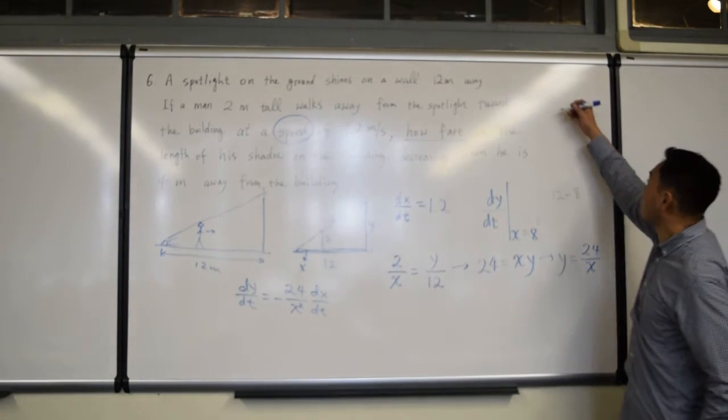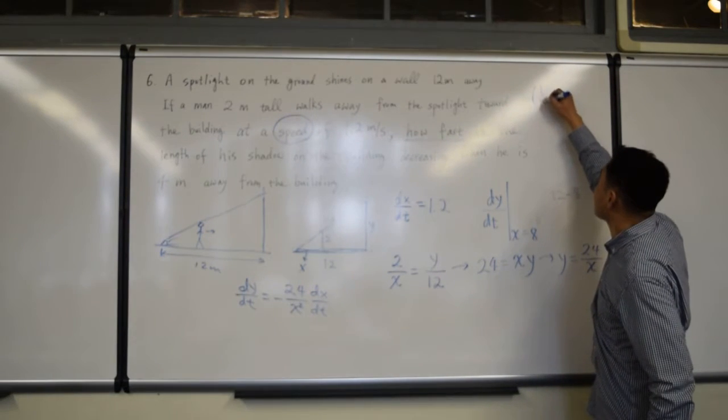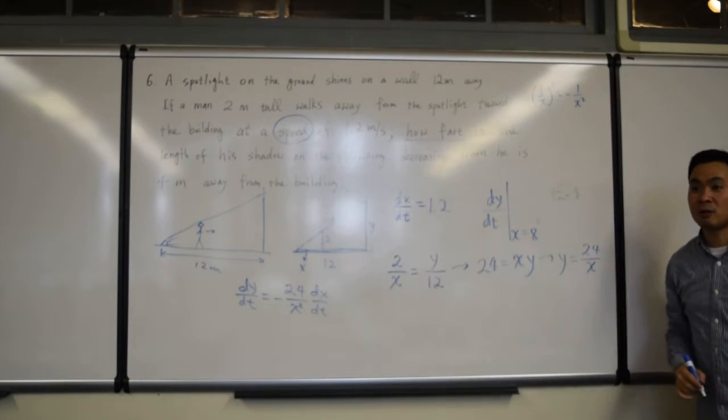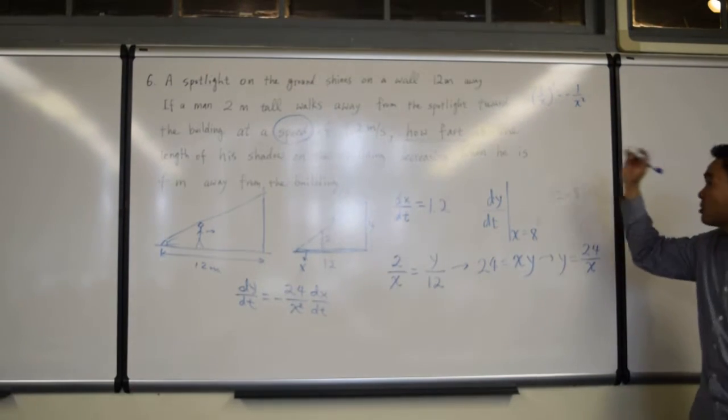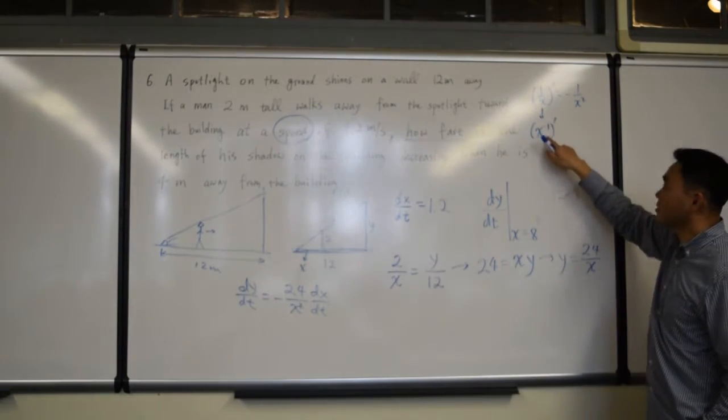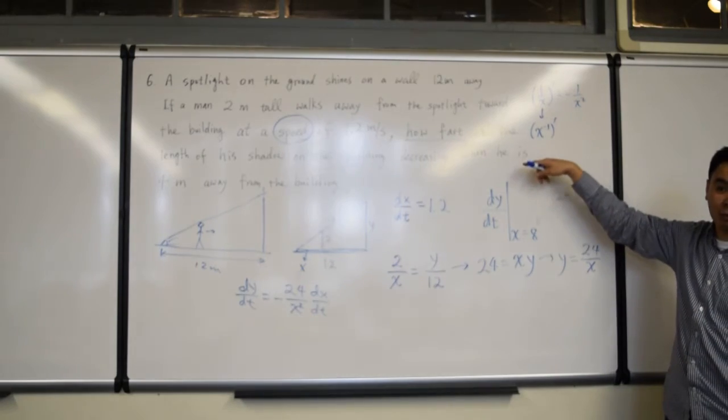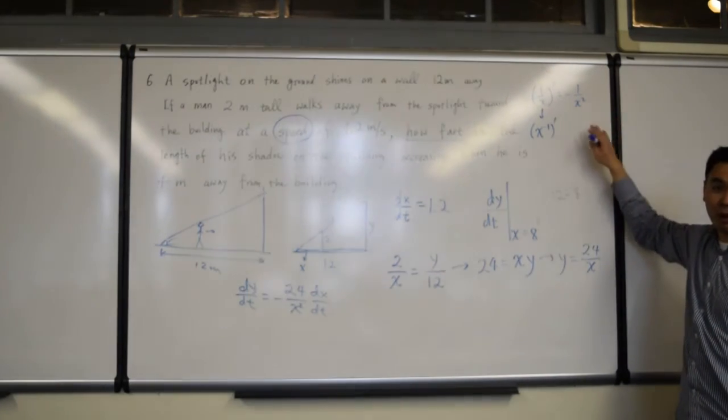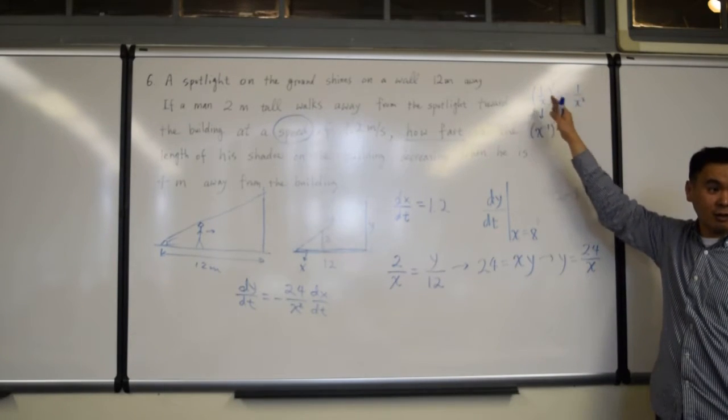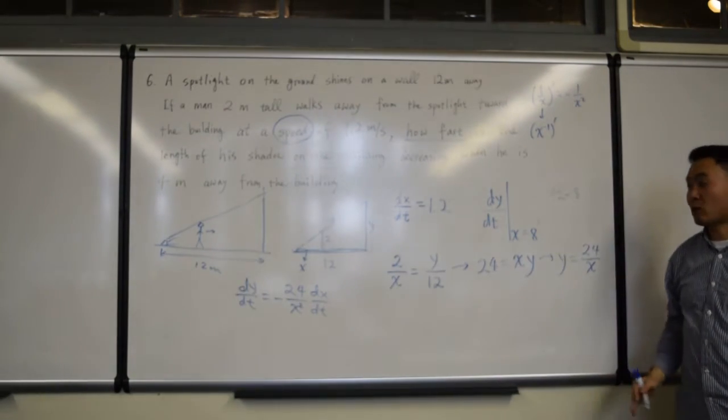By the way, hopefully everyone knows that 1 over x prime is negative 1 over x squared, okay? I mean, you can get this out of the power rule. See, this is x to negative 1 power, and if you use the power rule, negative 1 comes front, and then you can do all the calculations that you can get. This formula appears enough times that you should probably just memorize it, okay?